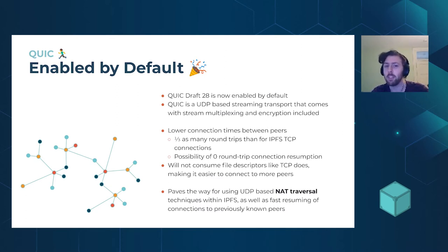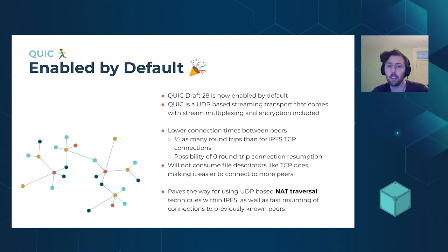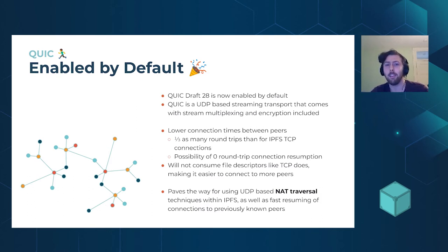QUIC allows lower connection times between peers — a third as many round trips — which is fantastic for DHT queries where you're querying many new peers. Going forward we can add zero round trips for resuming connections: you store information about previously encountered peers and send them messages even without an active connection. It also won't consume file descriptors like TCP does, making it easier to maintain more connections.